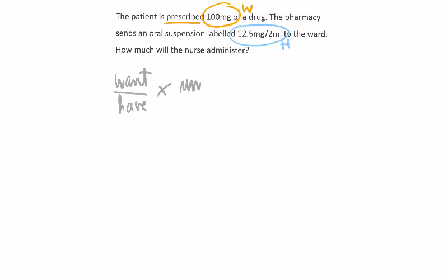Let's organize this. What do we want? We want 100 milligrams — always write the unit in. The have will be 12.5 milligrams per 2 mils. Which matches the milligram unit already in the formula? It has to be the 12.5, because we need to match the top and bottom of the fraction. So we've used 100 and 12.5 milligrams. The third quantity left is the 2 mils — the volume — so we multiply by 2 mils.